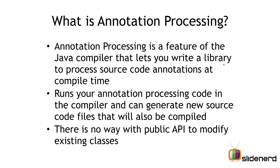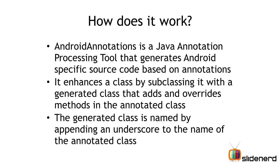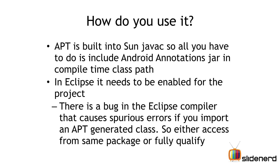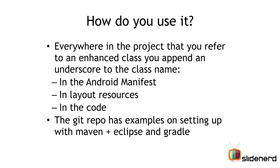Now, we will see what those source code files are as we go further, but there is no way to directly work with a library that generates source code in addition to the code that you write without including a plugin called apt. Android Annotations enhances a class by subclassing it and overriding the methods. In your build.gradle file, you'll be adding this apt plugin. Everywhere where you need to use your activity or service, a separate class is generated with an underscore at the end.